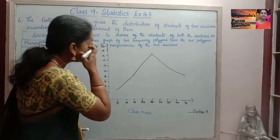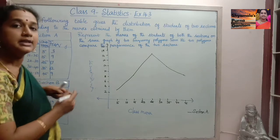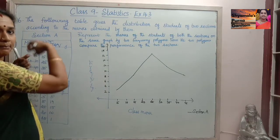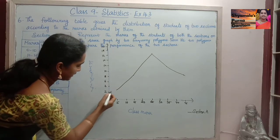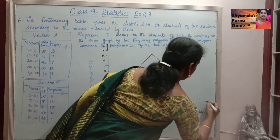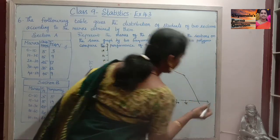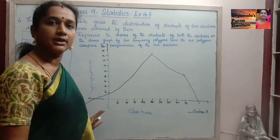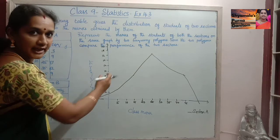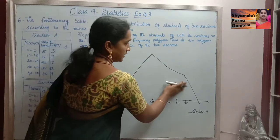To complete the frequency polygon for Section A, the class marks are 5, 15, 25, 35 with a difference of 10. So on the left side the polygon closes at minus 5 on the x-axis, and on the right side it closes at 55. The polygon must coincide with the x-axis at 0 frequency on both sides, giving it a complete enclosed area.